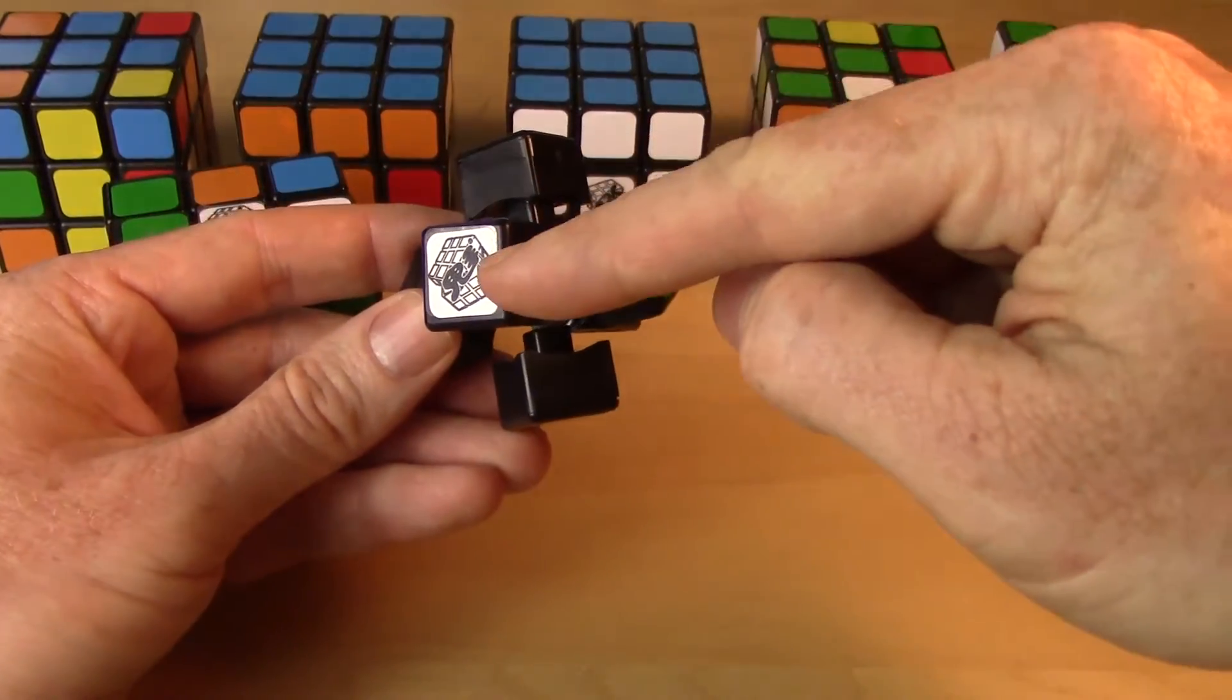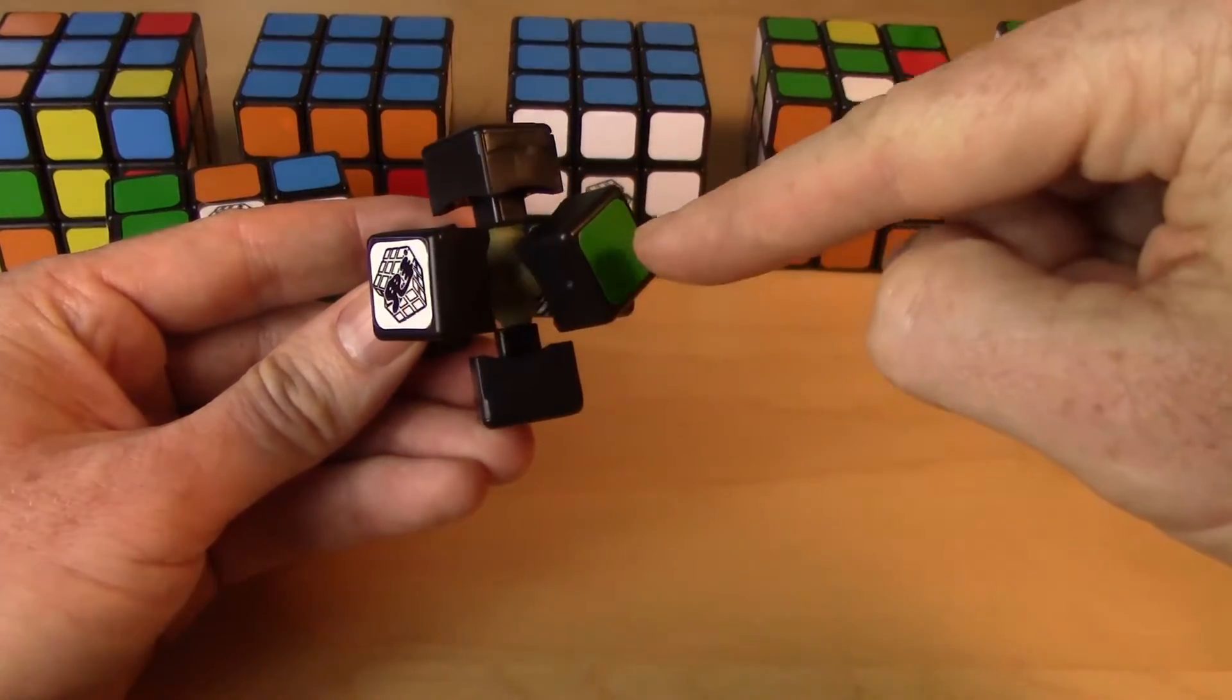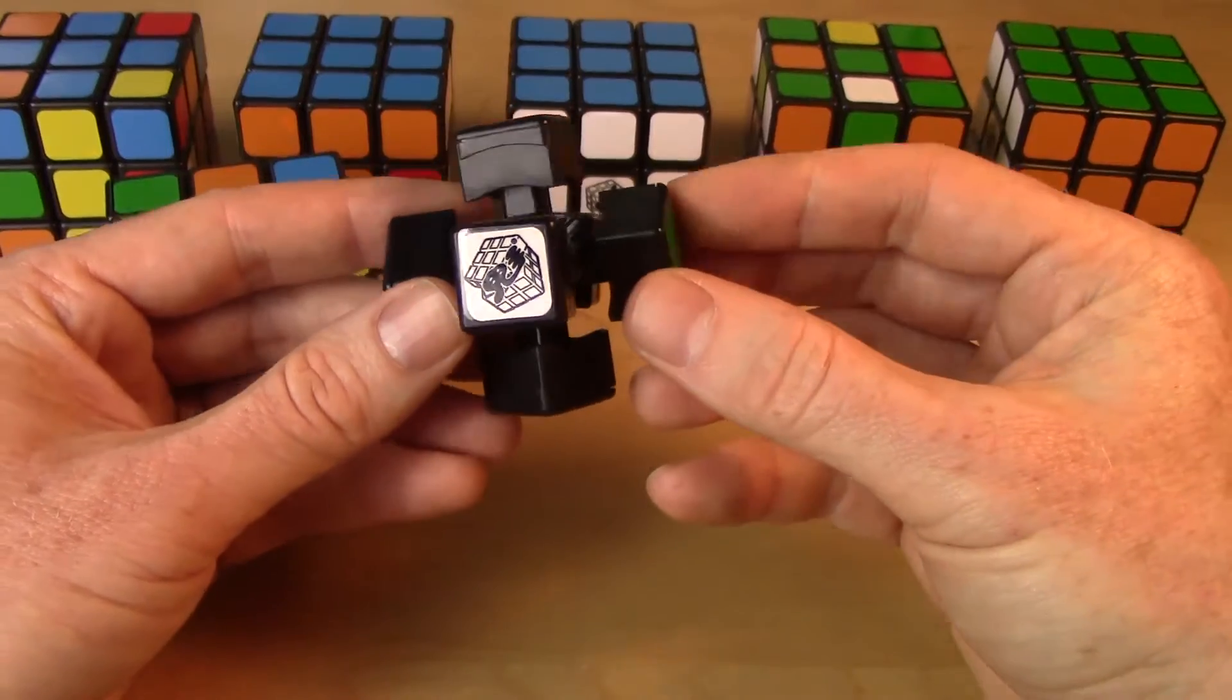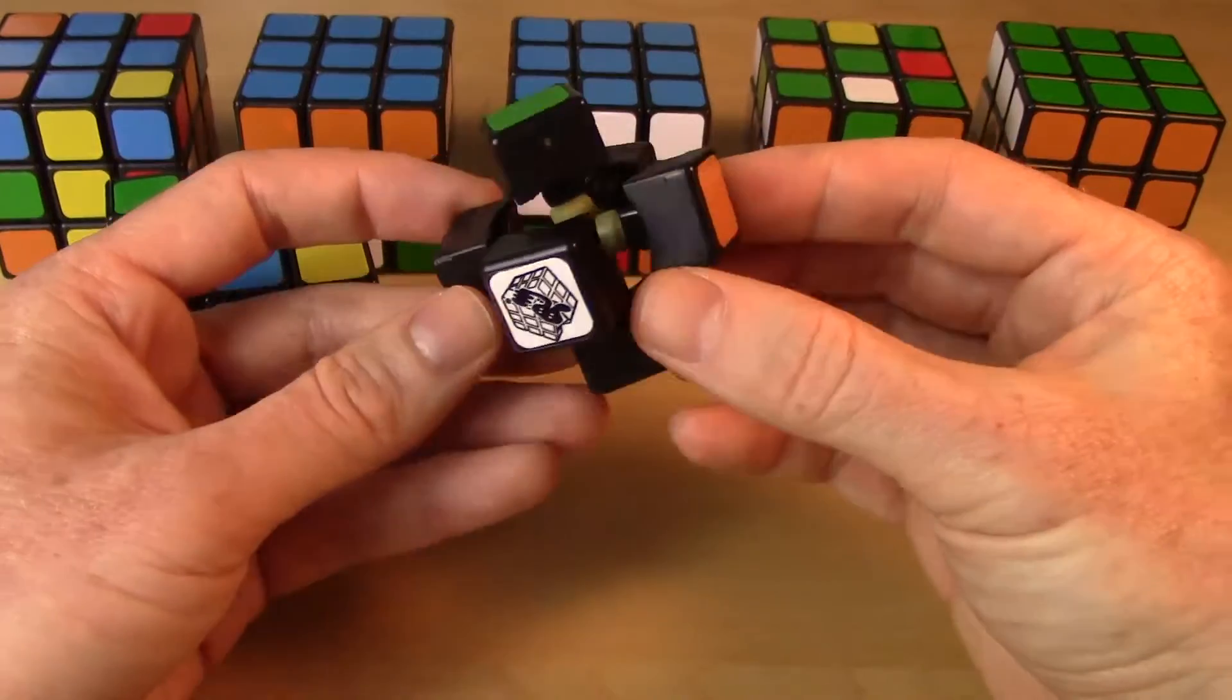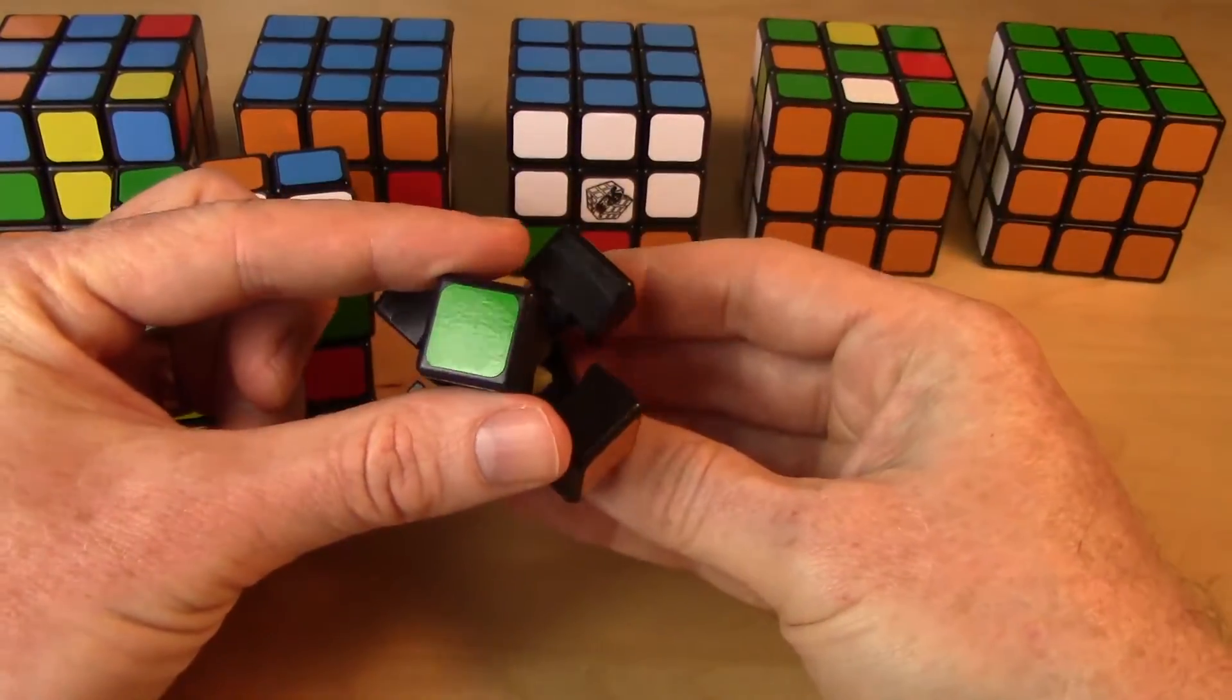One observation to make from this is that these center pieces don't move in relation to each other. There's no way to switch the white center piece with the green one. You know, I can't move that center piece there and that one there while leaving everything else in the same location. They're attached to each other. I can only move the whole structure as a whole. And that means that pieces that are opposite each other are always opposite each other.